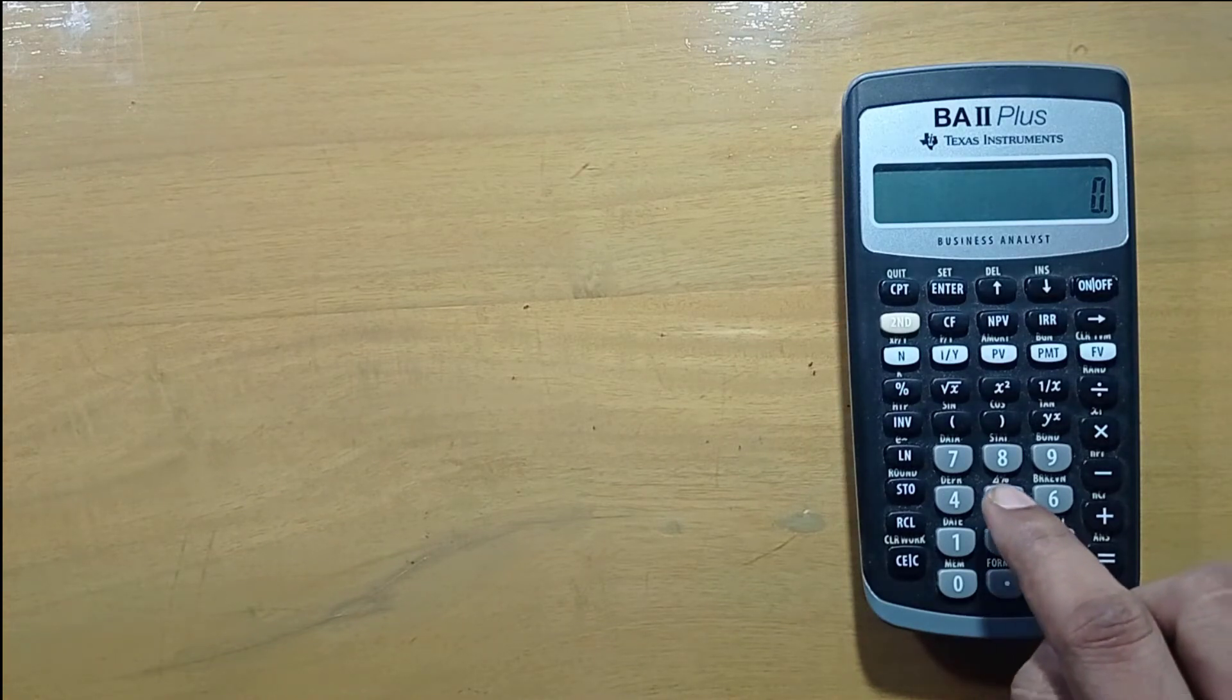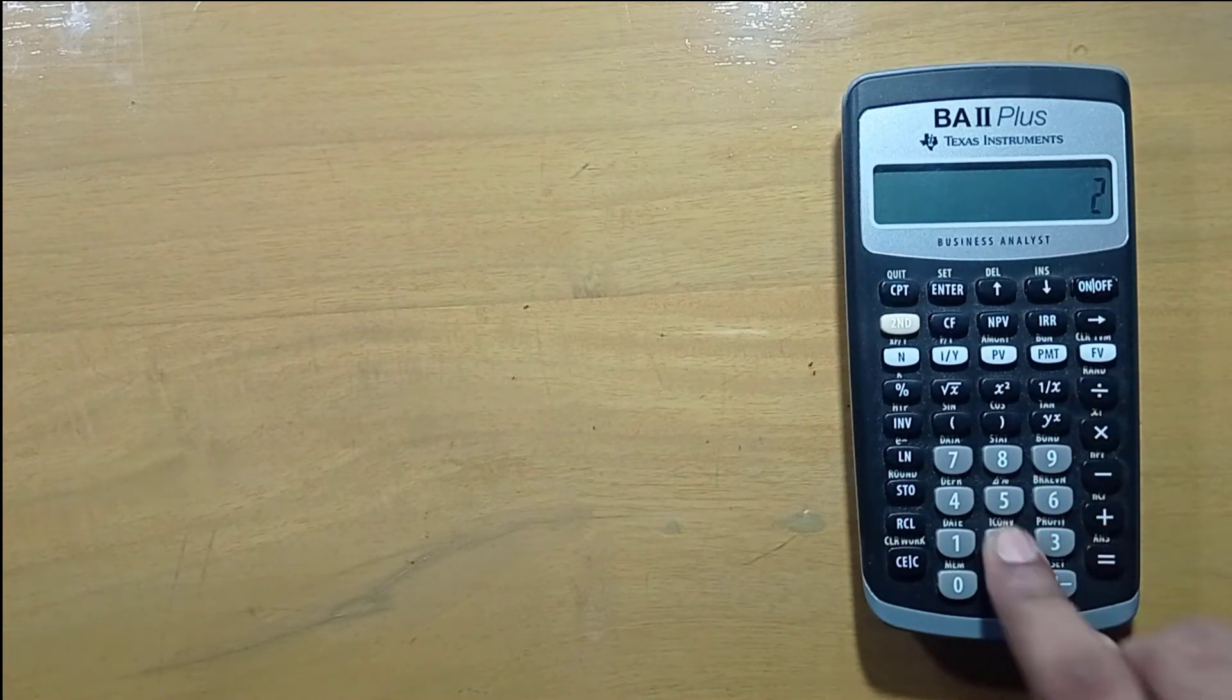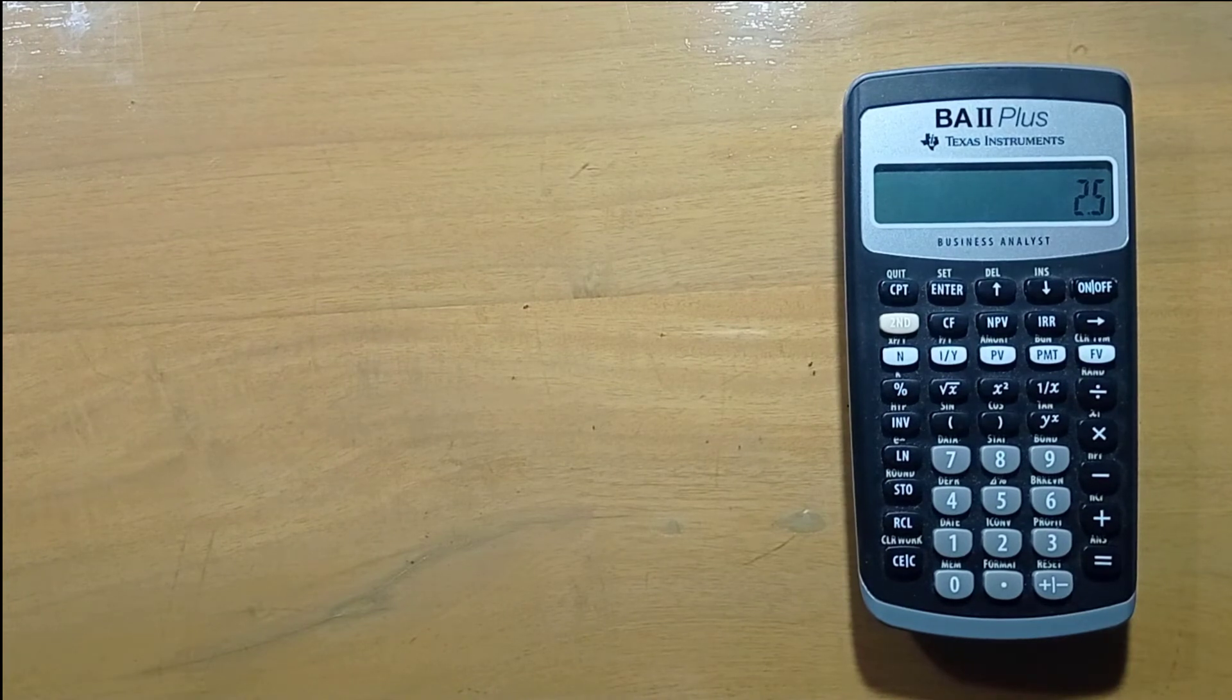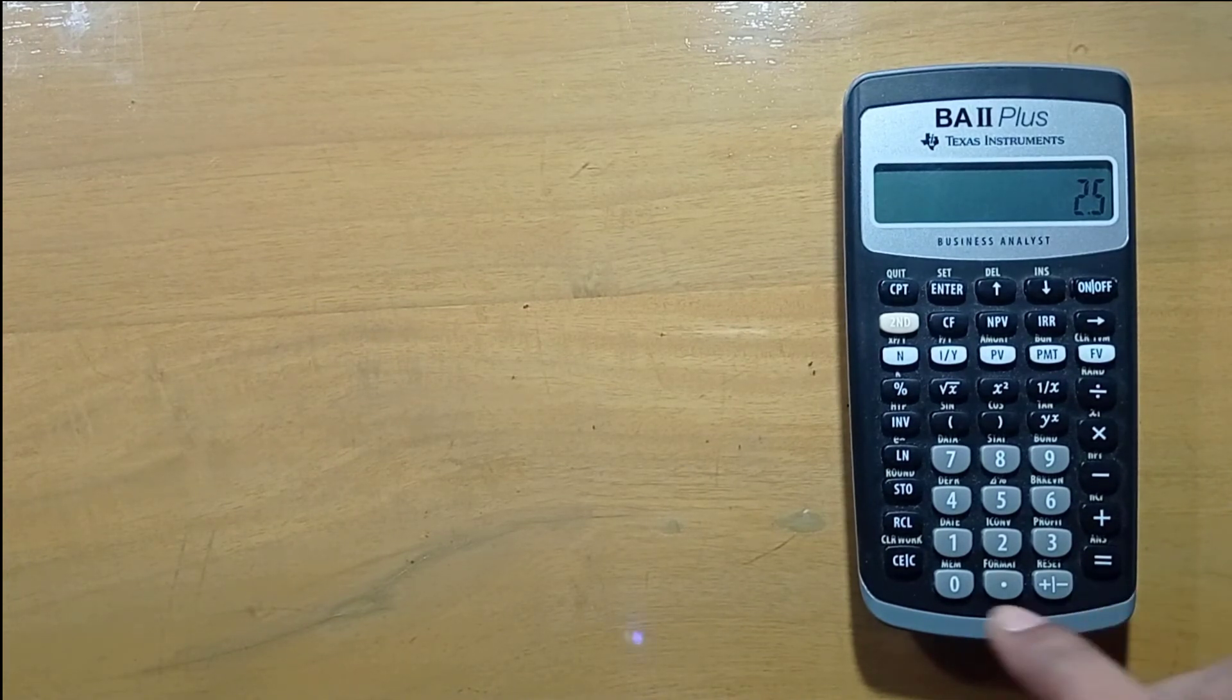Now divide 5 by 2. See, it is showing only one digit after decimal.